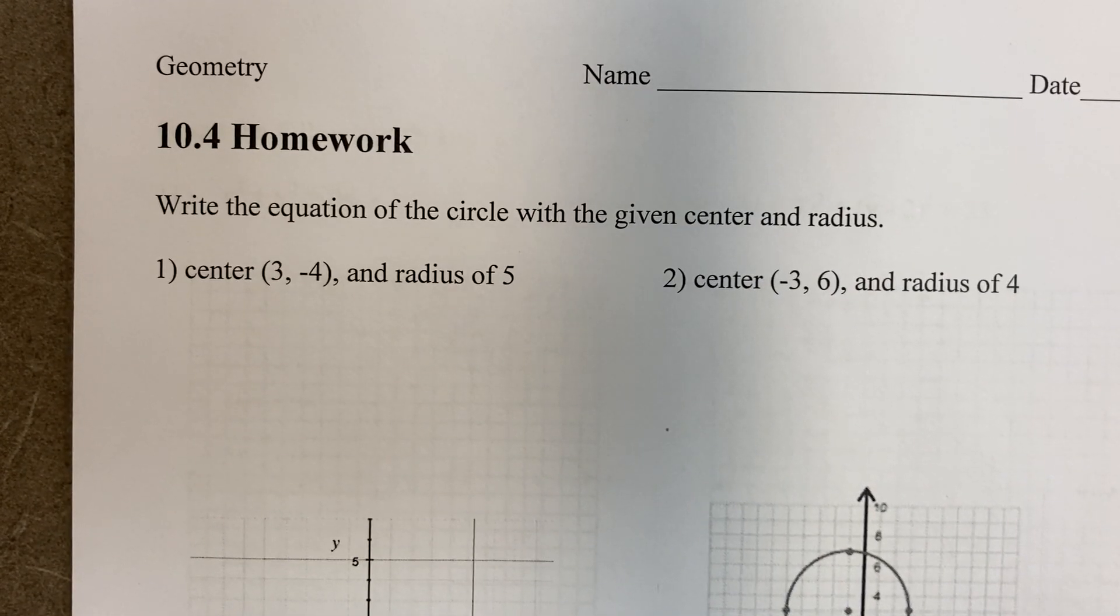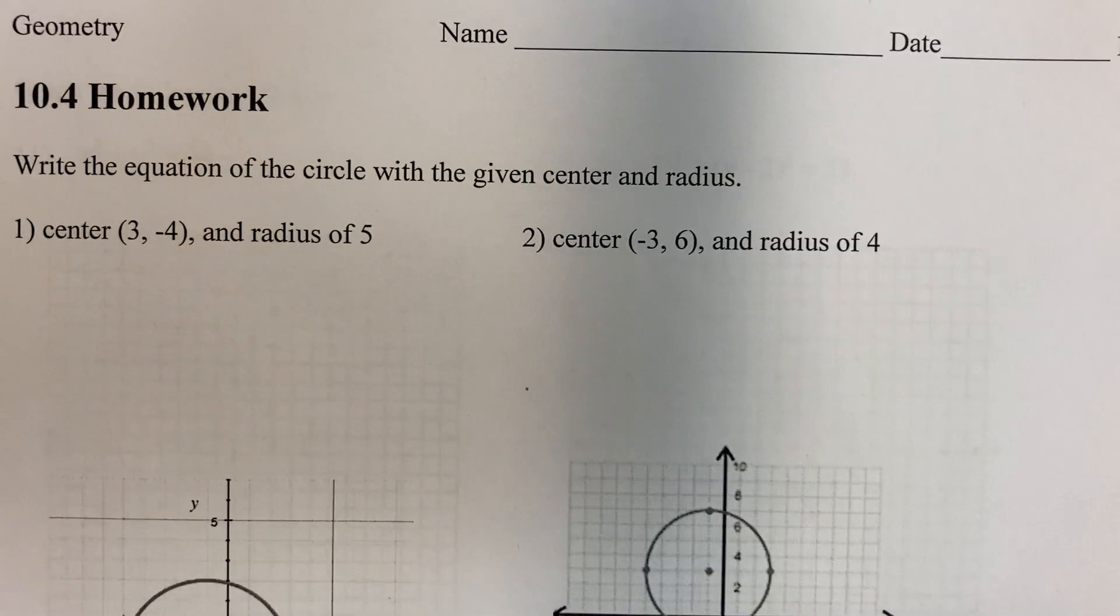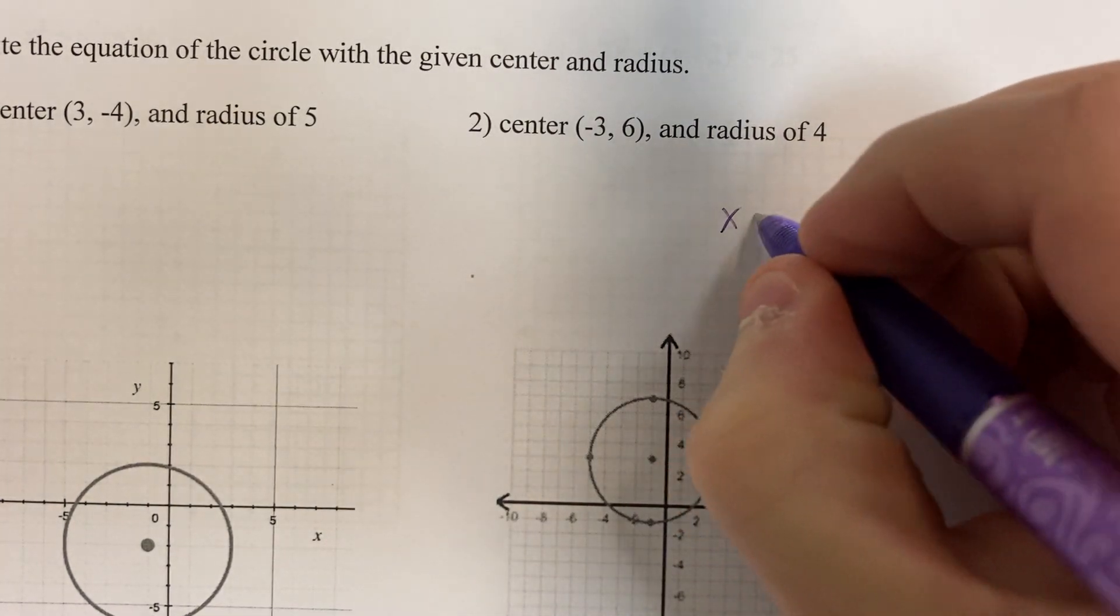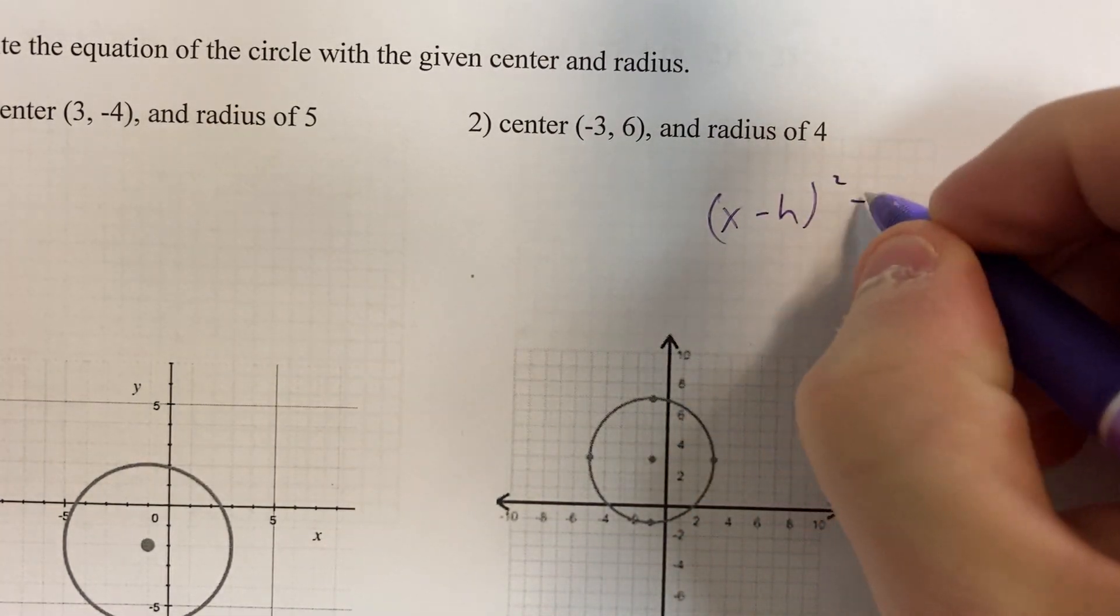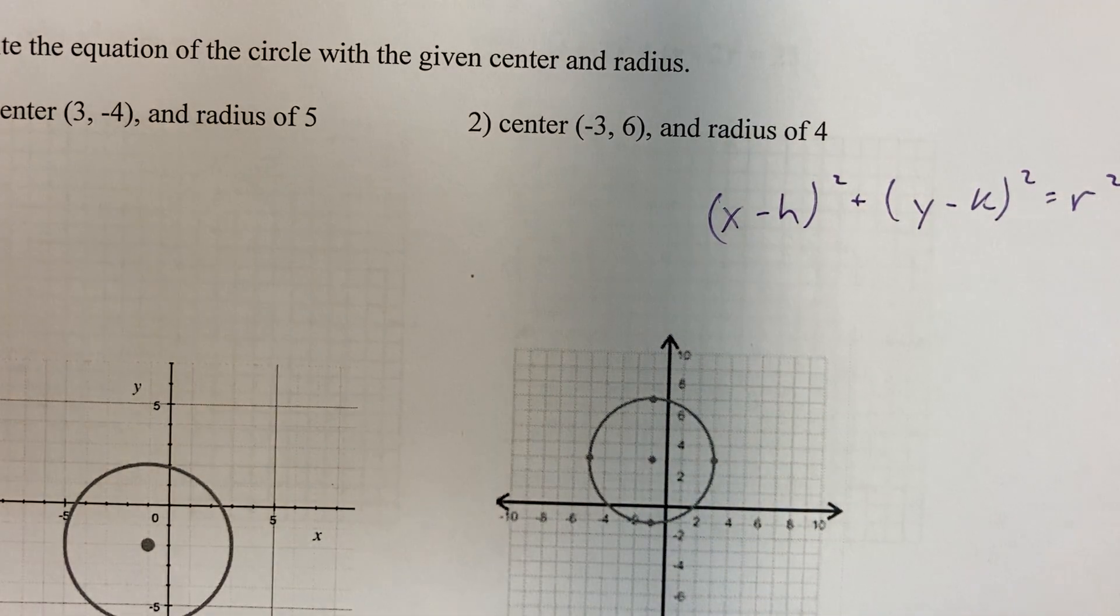Hello, welcome to the homework help. I'll go through half of these for you. Let's do the evens. So we need to write an equation. The equation looks like this: (x - h)² + (y - k)² = r².